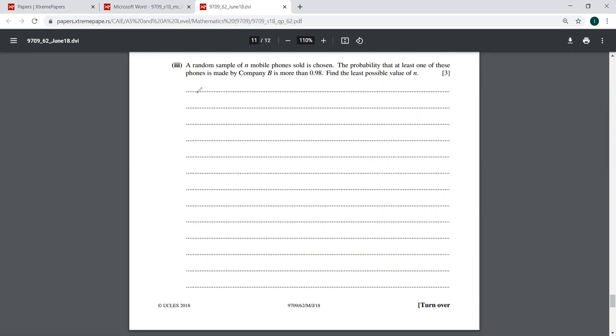So now we have to say, let X is binomially distributed. Now this N is not known, but he's talking about the company B. So that is 0.35.